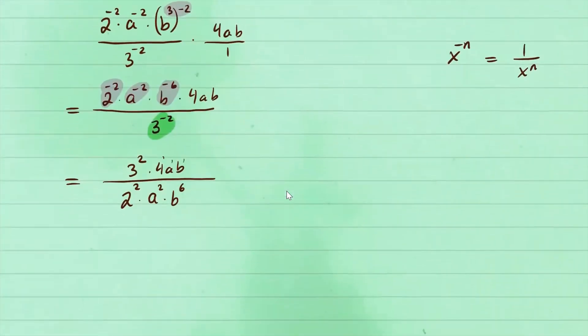Now let's go ahead and simplify this further. So 3 squared, well, that's 9. We still have 4a times b. And 2 squared, that's going to be 4a squared, times b to the sixth.